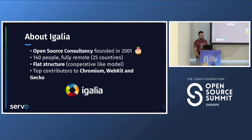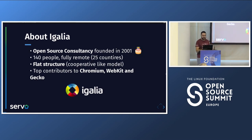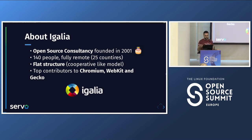Igalia is an open source consultancy founded in 2001, and actually today is our anniversary — we are 22 years old today. We are around 140 people from all around the globe, fully remote, with a flat cooperative-like structure. We are the top contributors to Chromium and WebKit after Google and Apple, and among the top contributors to Gecko. That means Servo is also something we were contributing to in the past, and now we are taking over the project maintenance.